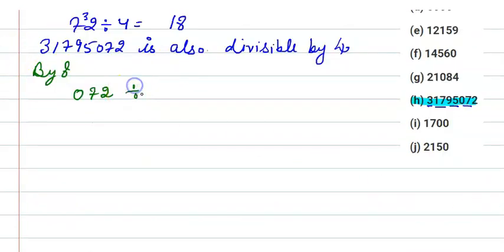So here you can check, eight nines are 72, so it is divisible by 8. So we can say that 31795072 is also divisible by 8.